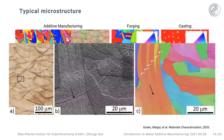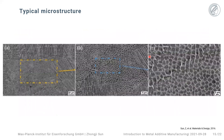Zooming in on one melt pool, there is clear evidence that epitaxial growth happens across the melt pool boundary. Even within the same grain we always see gradients or slight rotations happening within each grain. It is commonly believed this is due to residual stresses occurring during fabrication, and it is a unique feature pertaining to AM.